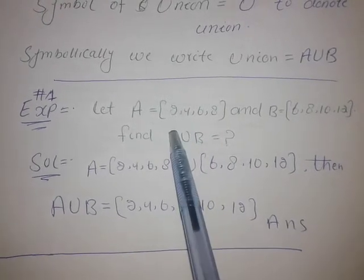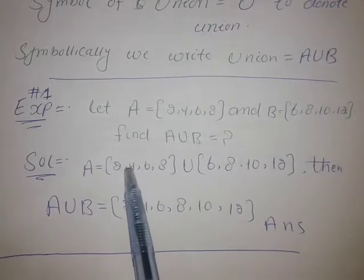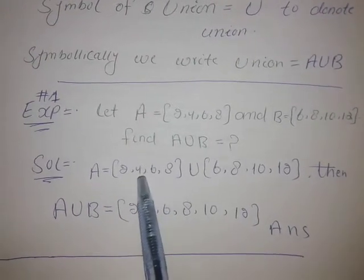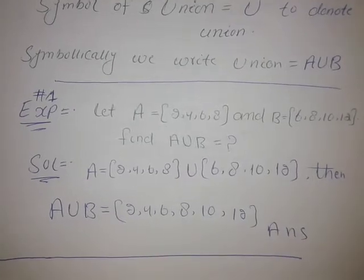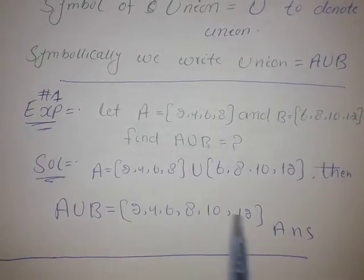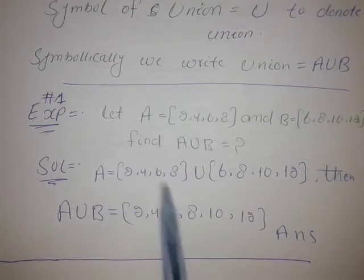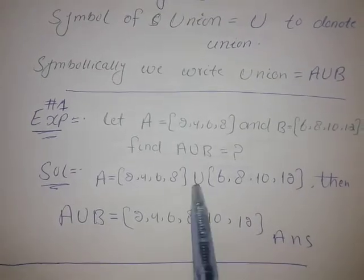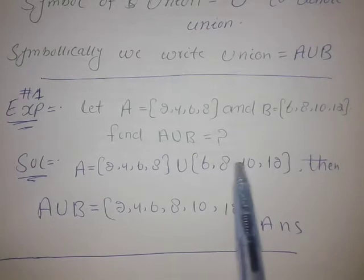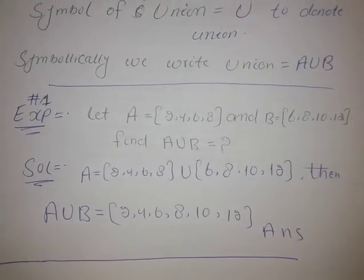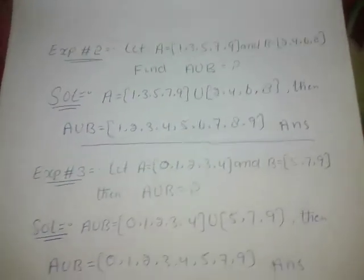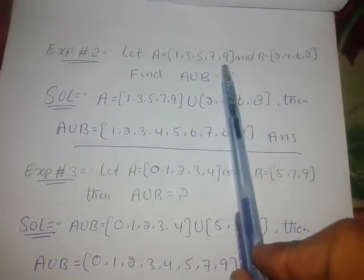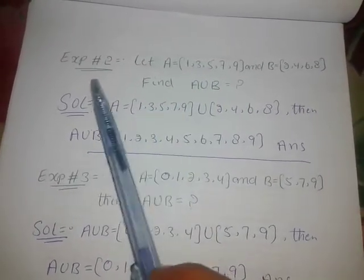We find A union B by combining all elements of both sets. For example number two, let A be equal to {1, 3, 5, 7} and B be equal to {2, 4, 6, 8}. Find A union B — the union of these two sets.